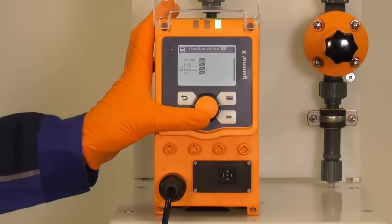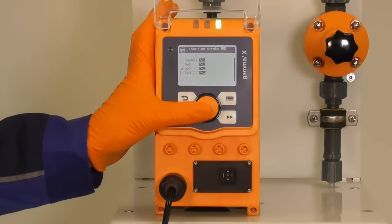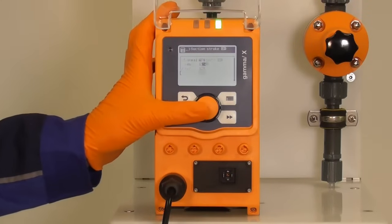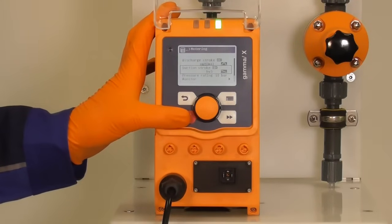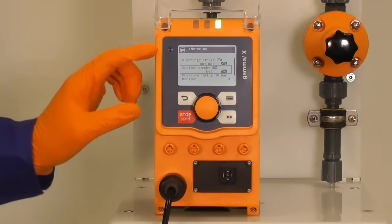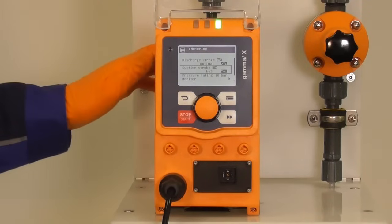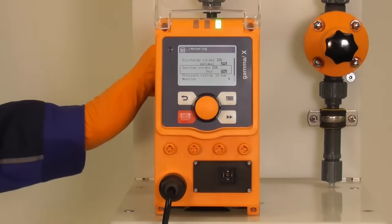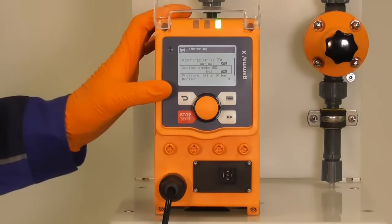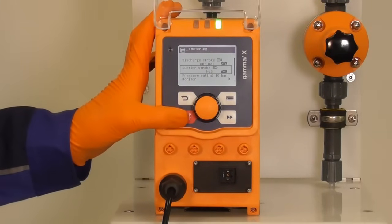When the viscosity is over 1000 mPa, high viscosity 3 is recommended. When you have selected high viscosity 3 in combination with a high viscosity head you can meter easily mediums up to 3000 mPa. Now I let the pump pump.